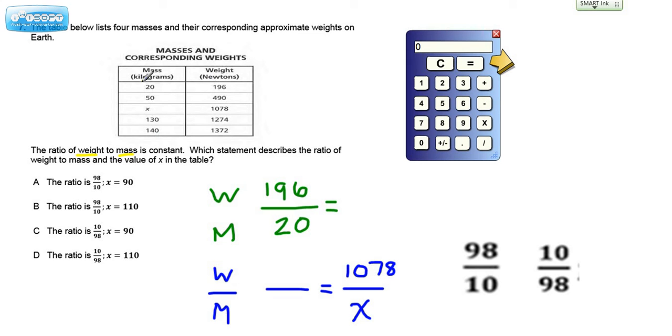So if we just take this first value in here, which is 196 for the weight and 20 for the mass, we're basically trying to figure out is it a 98 to 10 ratio or is it a 10 to 98?